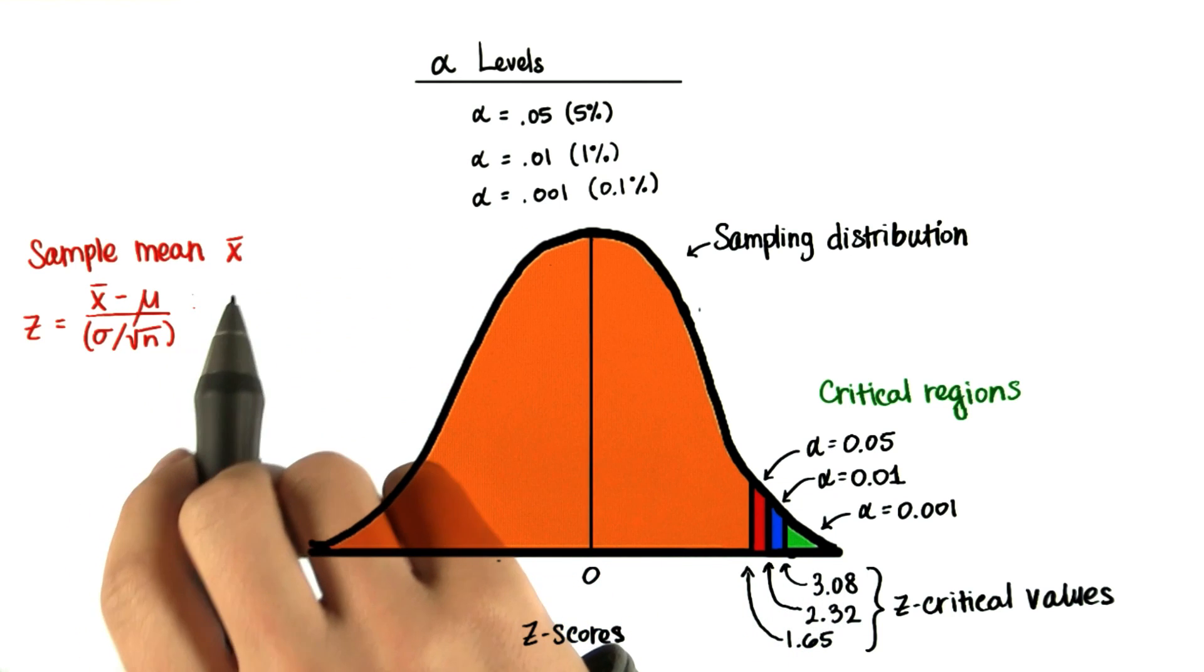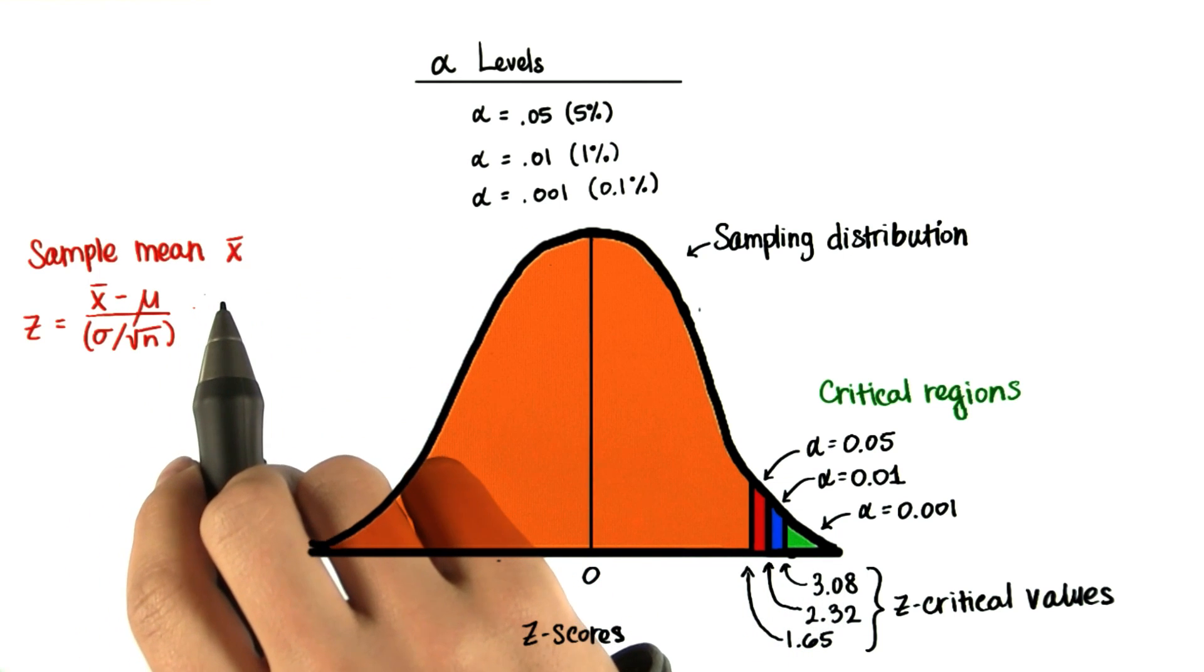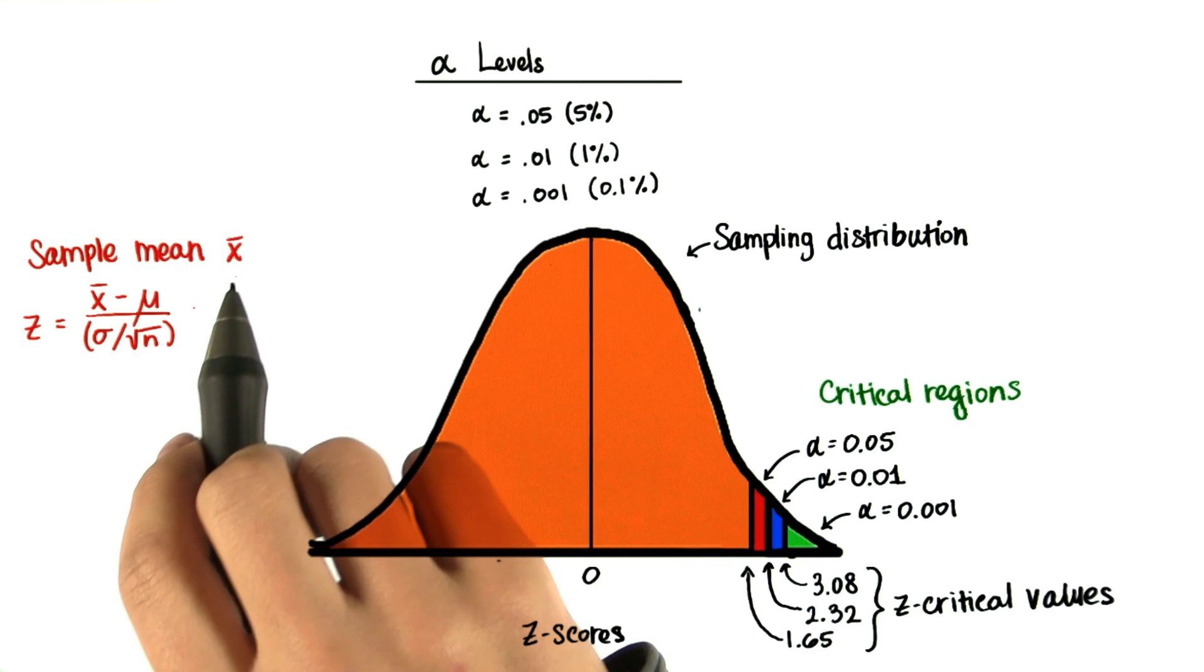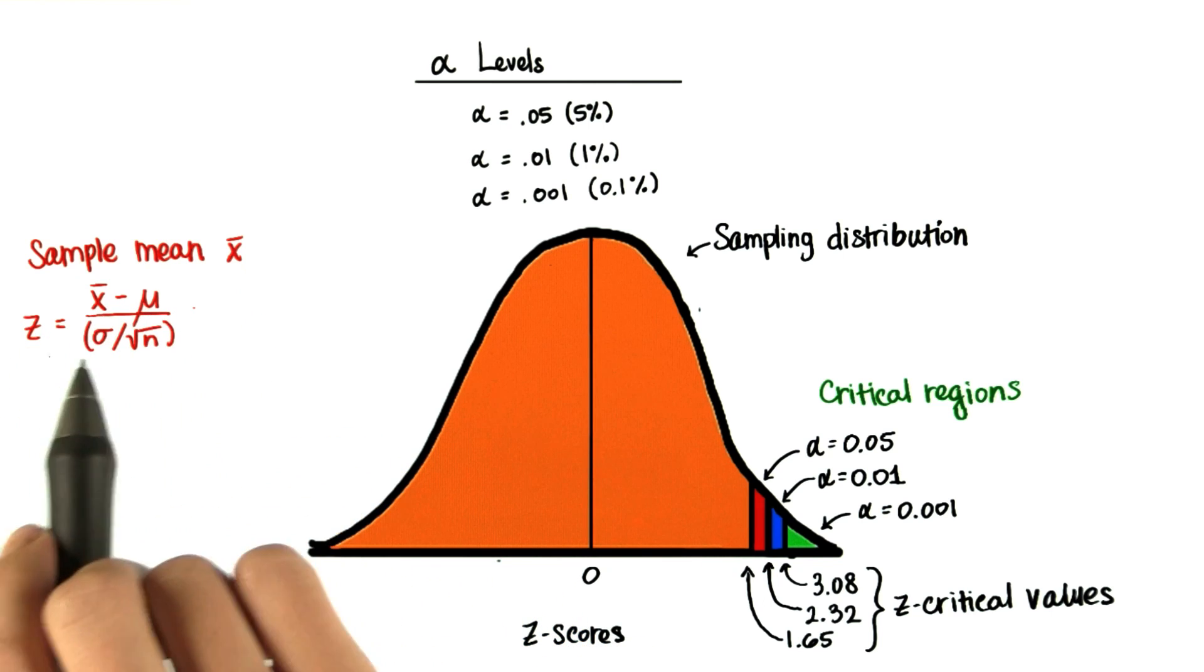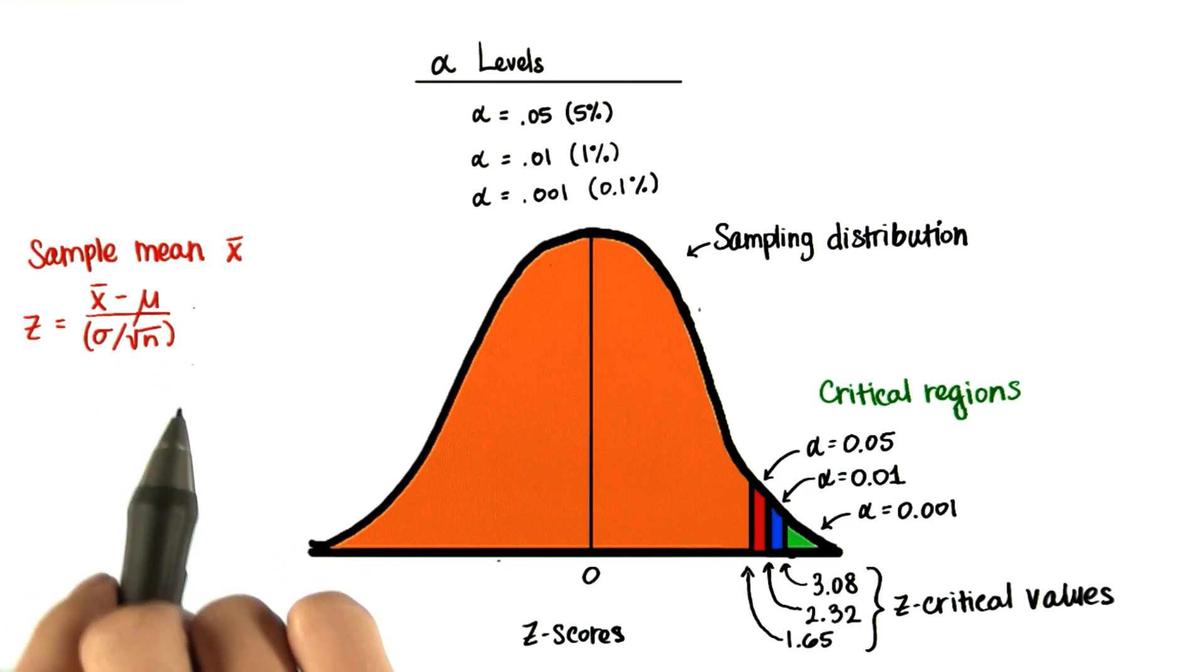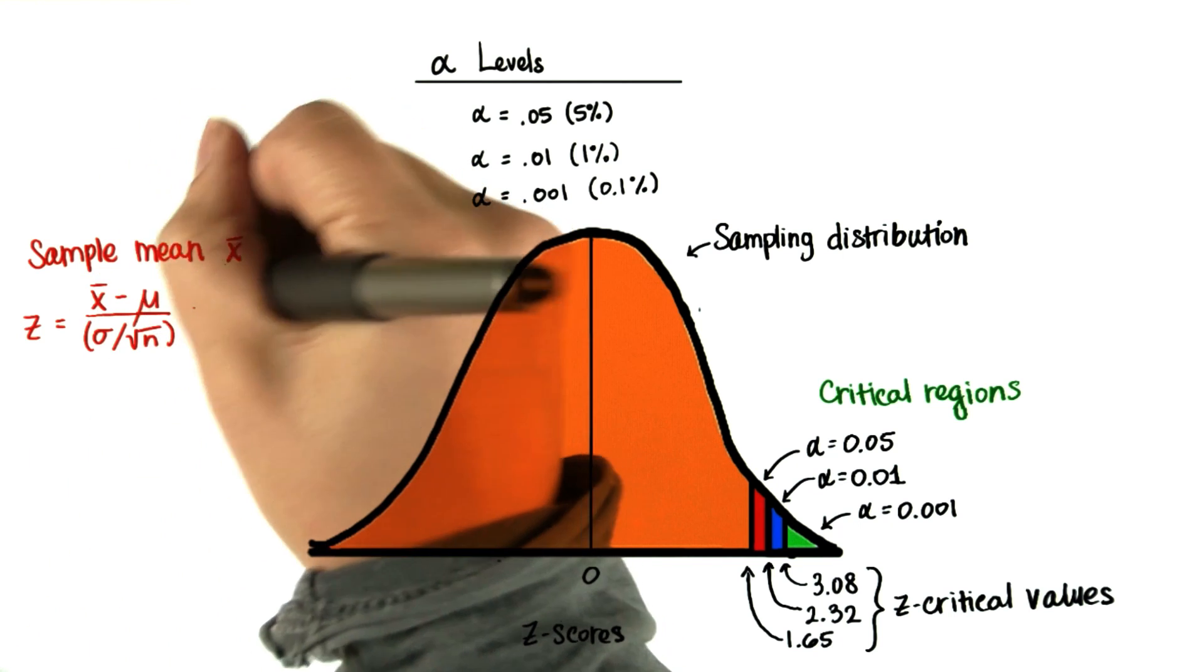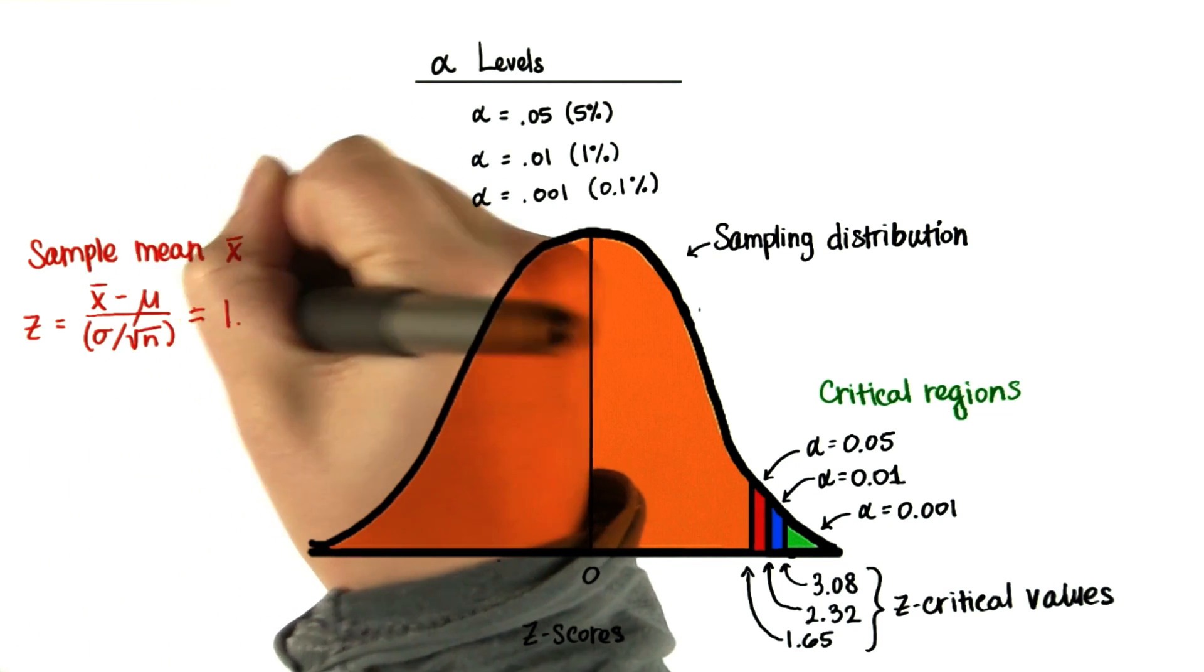For example, say we take some sample mean from some sample size n, and then we calculate the z-score. So remember we subtract the mu and then divide by the standard deviation of the sampling distribution. And let's say we get that the z-score is 1.82.